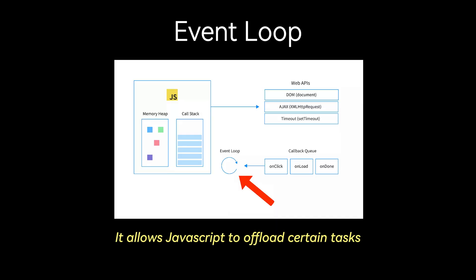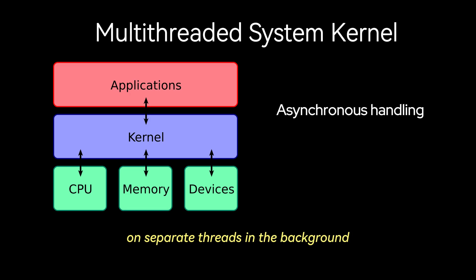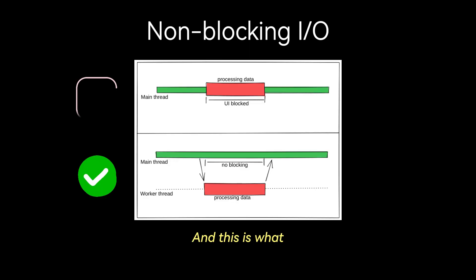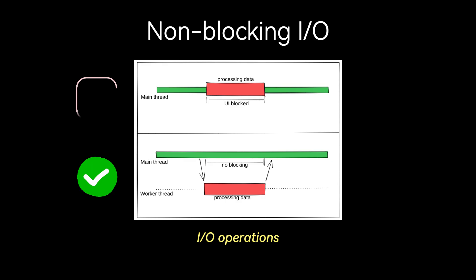The event loop allows JavaScript to offload certain tasks to the system kernel, which is typically multi-threaded. The kernel can then handle these tasks asynchronously on separate threads in the background without blocking the main thread. And this is what allows JavaScript to perform non-blocking I/O operations.